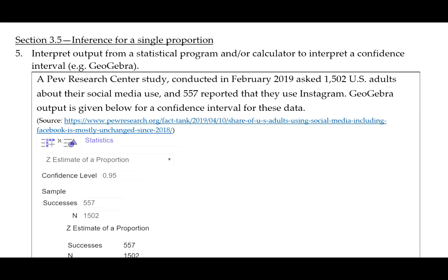The fifth learning objective from Section 3.5 is to interpret output from a statistical program and/or calculator to interpret a confidence interval, for example, GeoGebra.